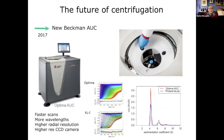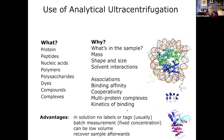In 2017 Beckman made the Optima — a new centrifuge with faster scans, more wavelengths, and a higher resolution camera. Let's go back and think about why we want to use AUC.